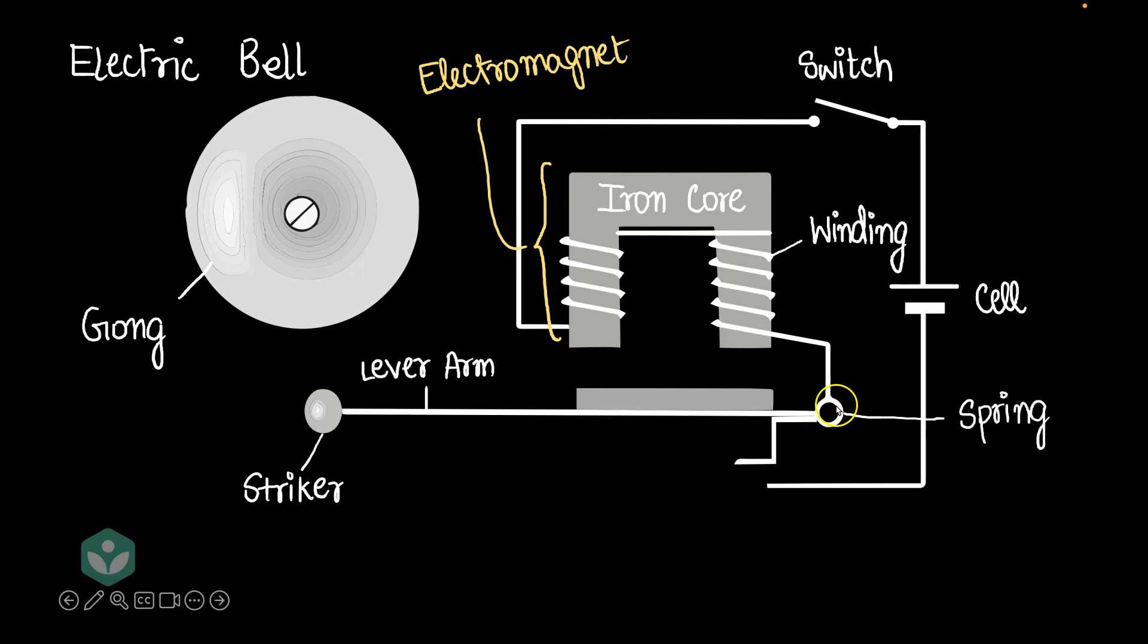The spring applies a force on the lever arm and pushes it downwards. But if the spring is constantly pushing the lever arm down, there must be something to keep the lever arm in place. And that's where the contact screw comes in. The contact screw is an adjustable screw that can help you change the height at which the lever arm sits.